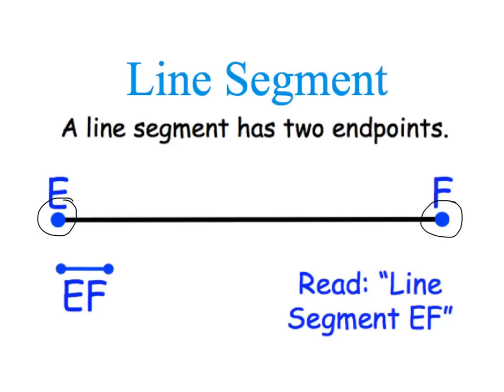and it stops here at F. You call this line segment EF, and you write it like this. EF with the end points on both ends of the segment.